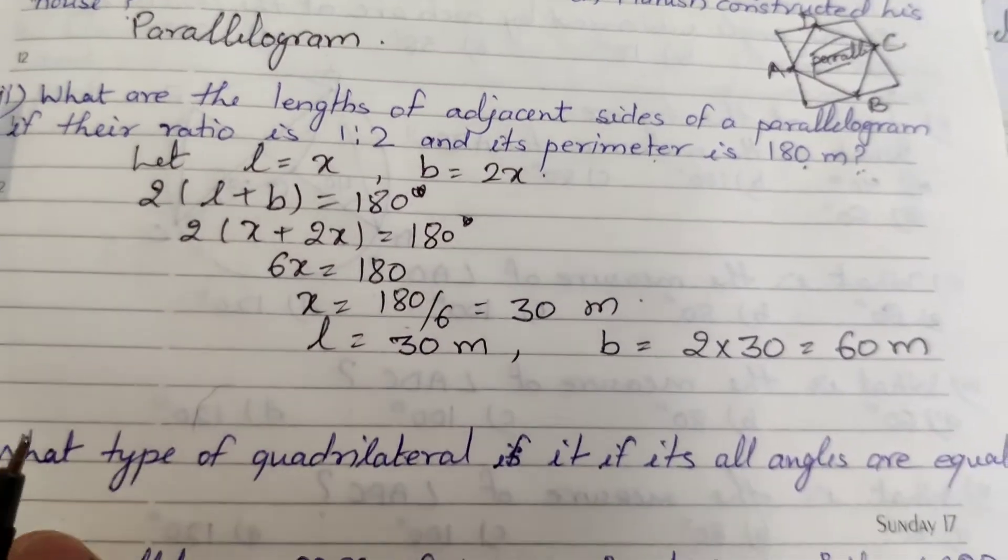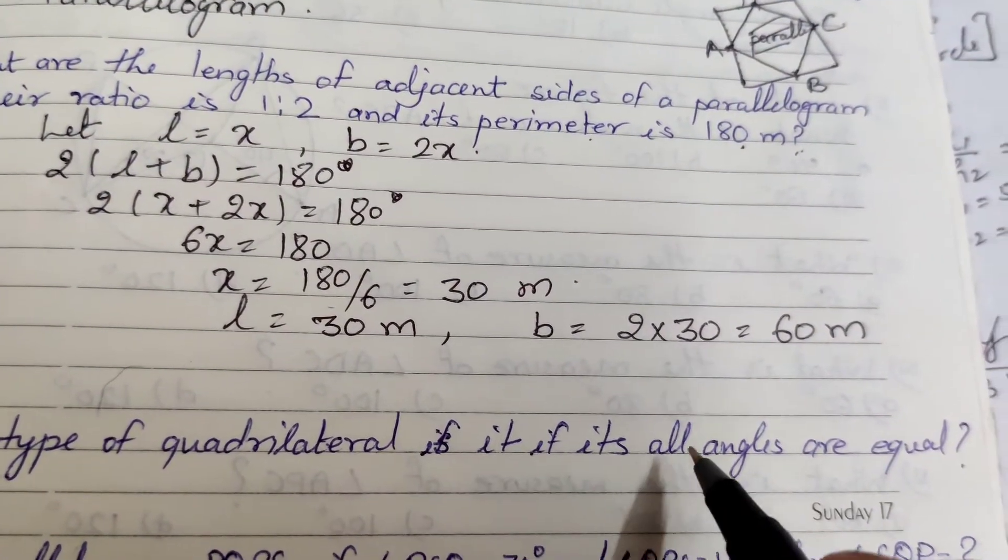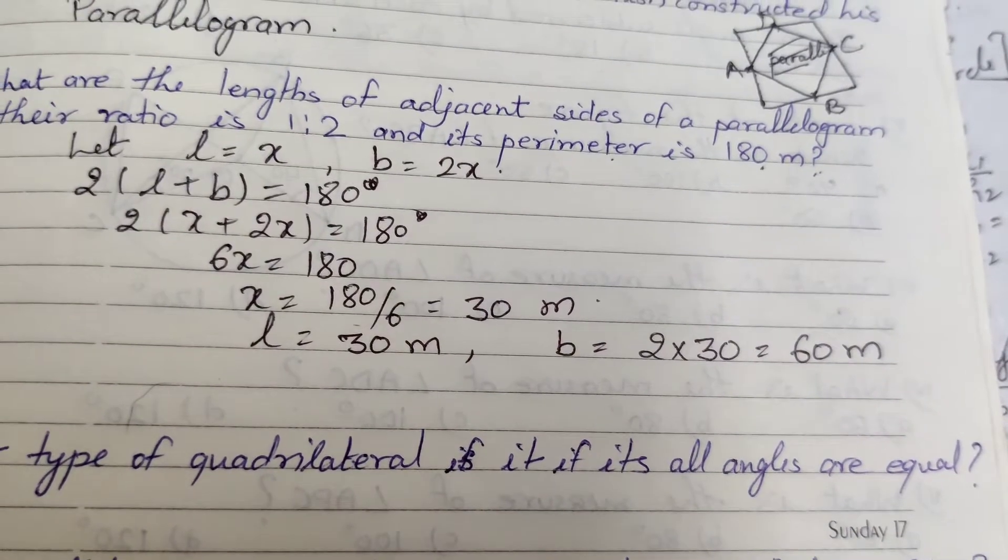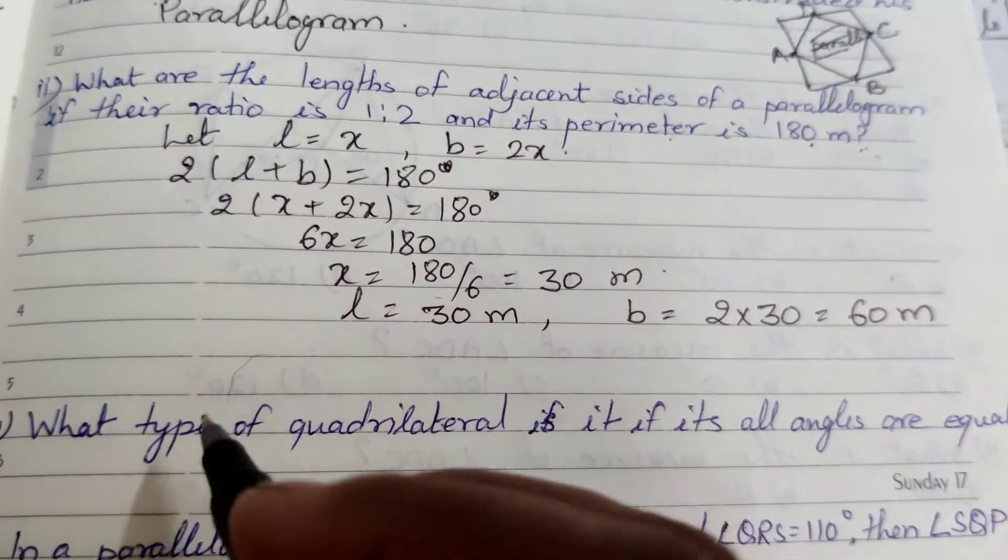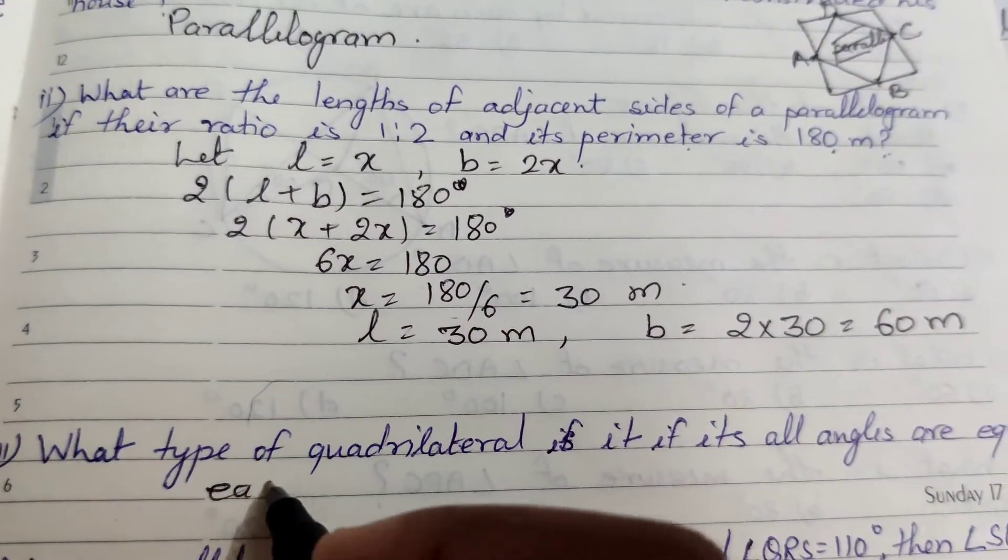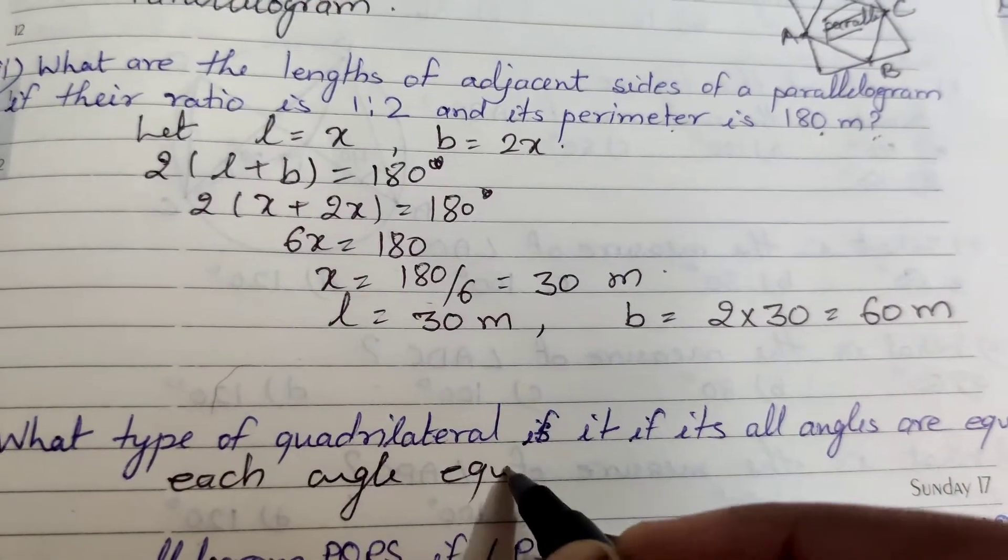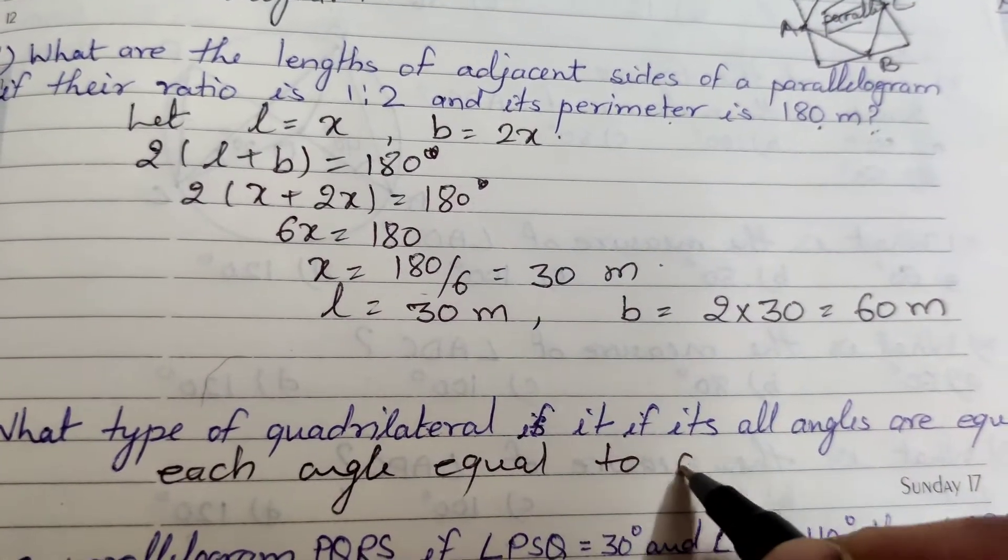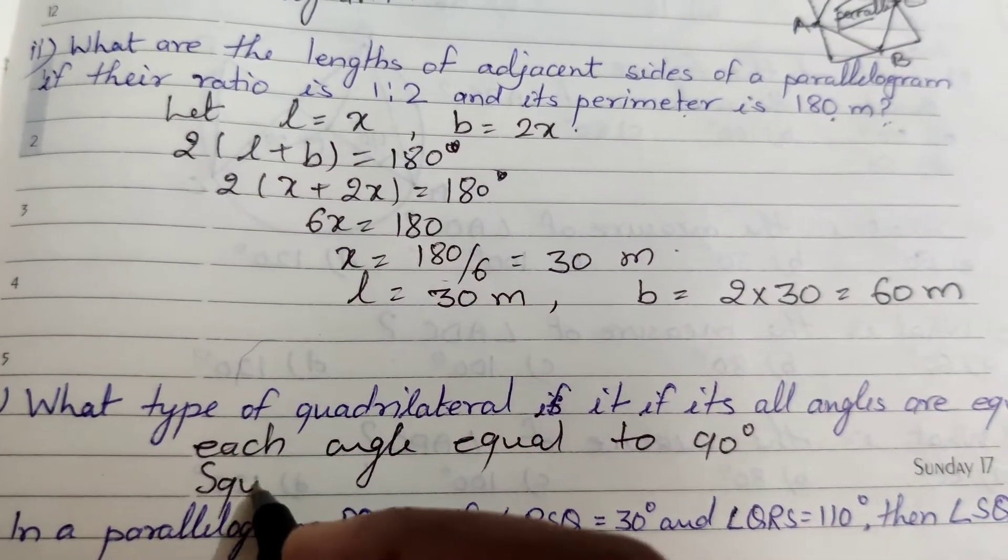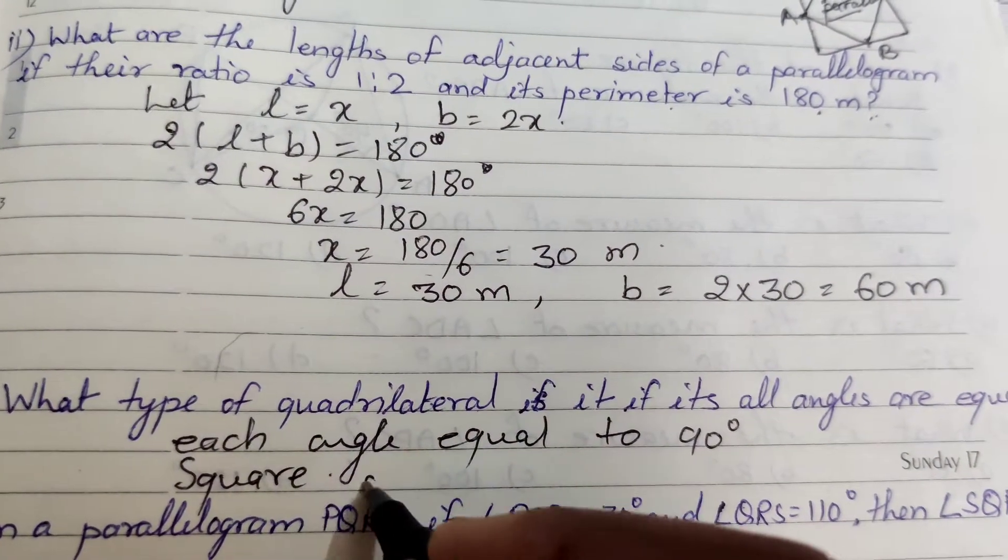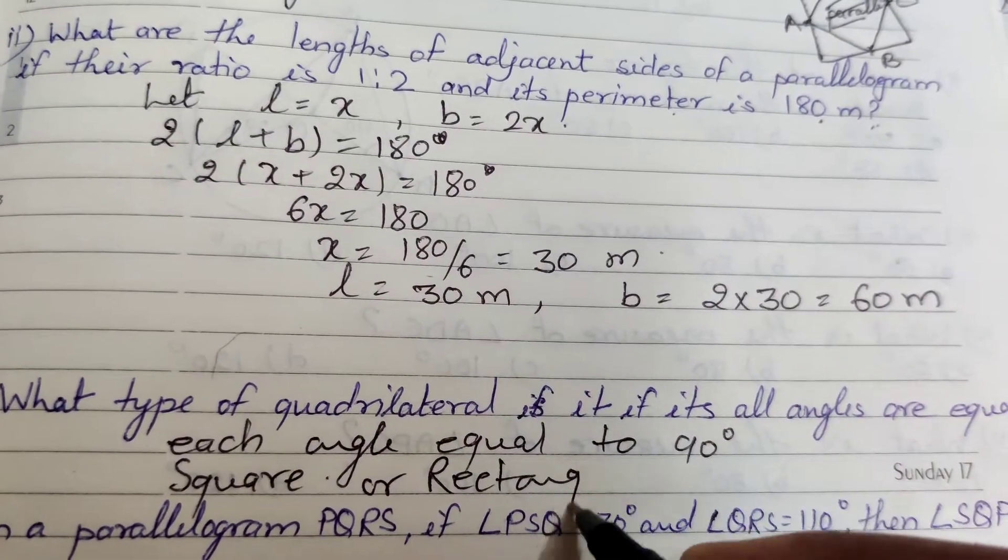Question number 3: What type of quadrilateral is it if all angles are equal? If ABCD has four equal angles, then each will be 90 degrees. What type of parallelogram could be possible? Square or rectangle. These two can have all angles equal to 90 degrees. But it is a rectangle because the sides are 30 and 60.